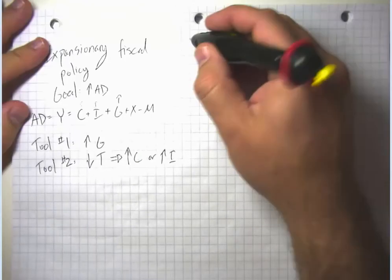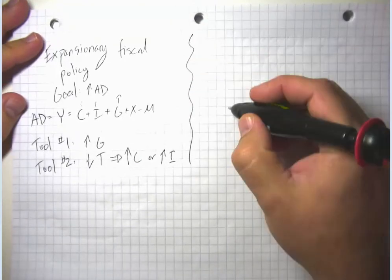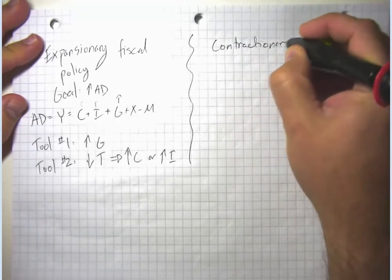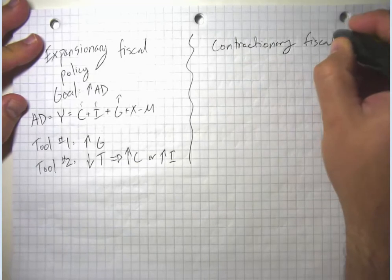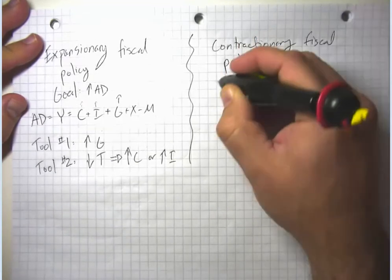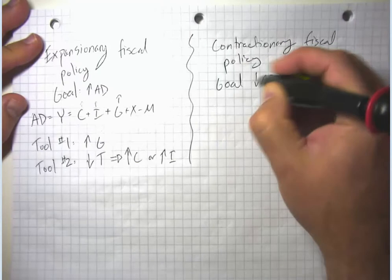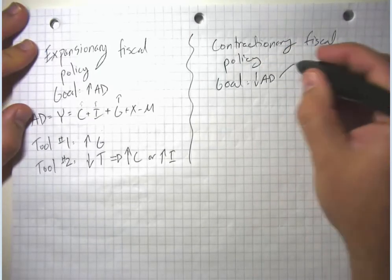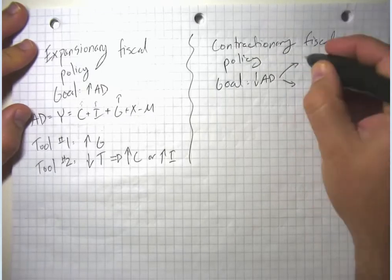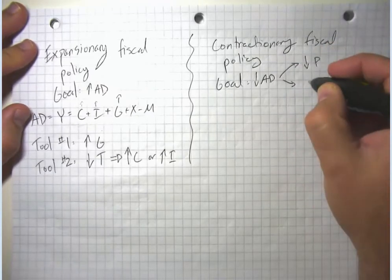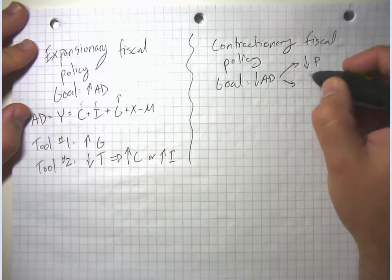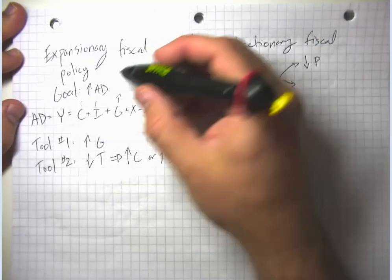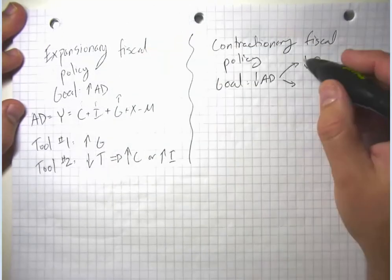Contractionary fiscal policy has as its objective a decrease in aggregate demand. That may sound silly, but remember that a decrease in aggregate demand is going to cause a fall in the price level. So if we have an inflation problem, we would want to use contractionary fiscal policy. If we have an unemployment problem, then we want to use expansionary fiscal policy.